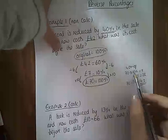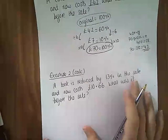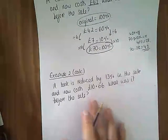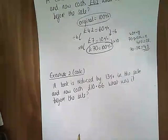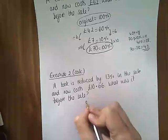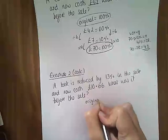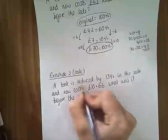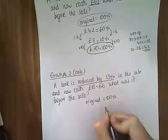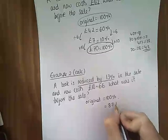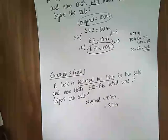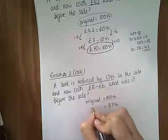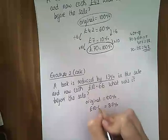Okay, example two, very similar. A book is reduced by 13% in the sale and now costs £10.66. What was it before the sale? Okay, so same thing. We're trying to get back to the original. The original is always going to be worth 100%. It's been reduced by 13%. So that must leave us with 87%. Okay, so 87% is equal to £10.66.